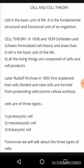Cells are of three types: 1. Prokaryotic cell, 2. Mesokaryotic cells, and 3. Eukaryotic cells. Tomorrow we will talk about the three types of cells.